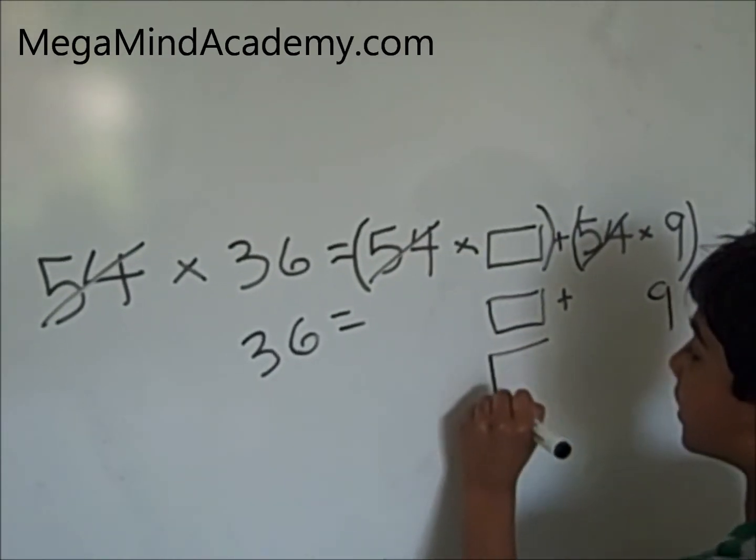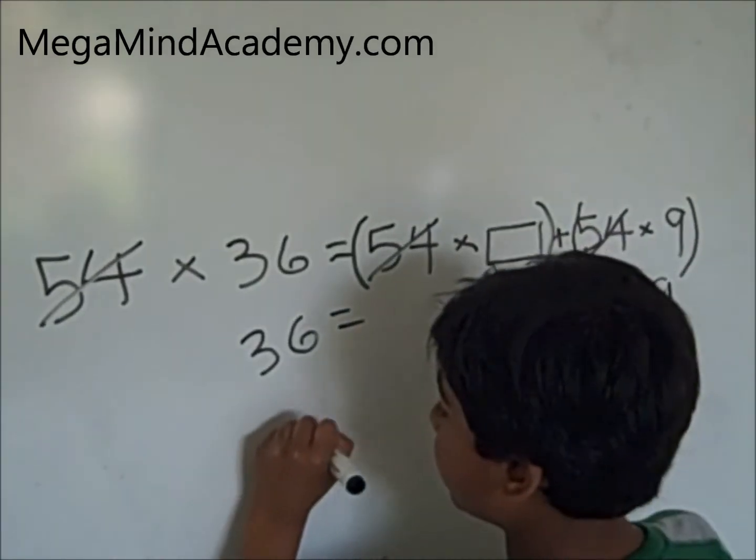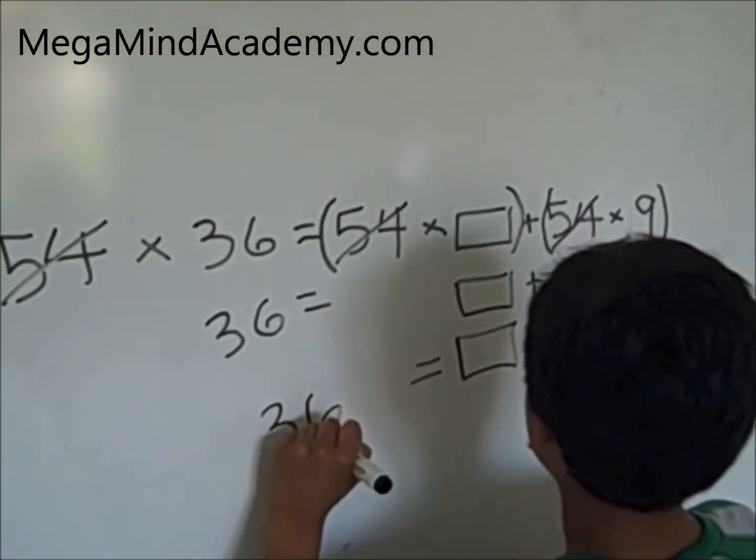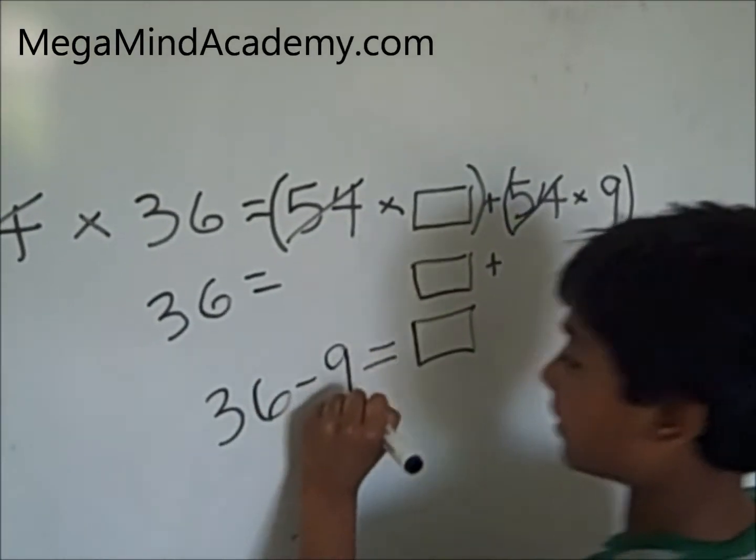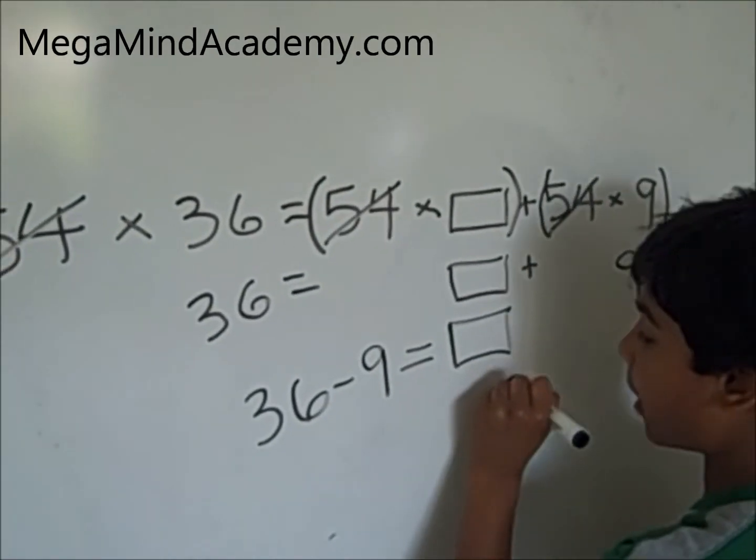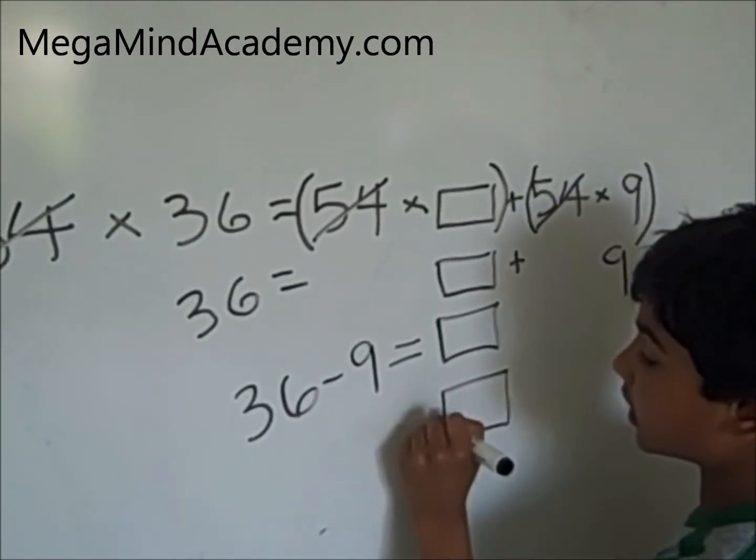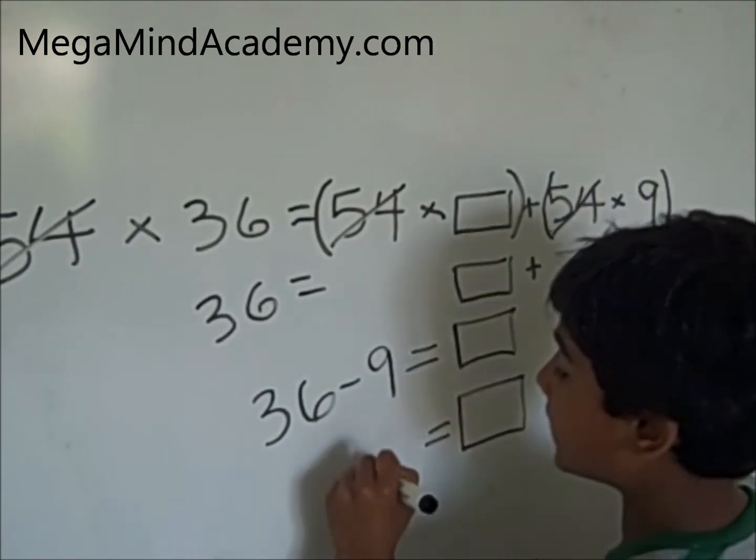Now let's simplify the equation. 36 equals box plus 9. Box equals 36 minus 9. Box equals 27.